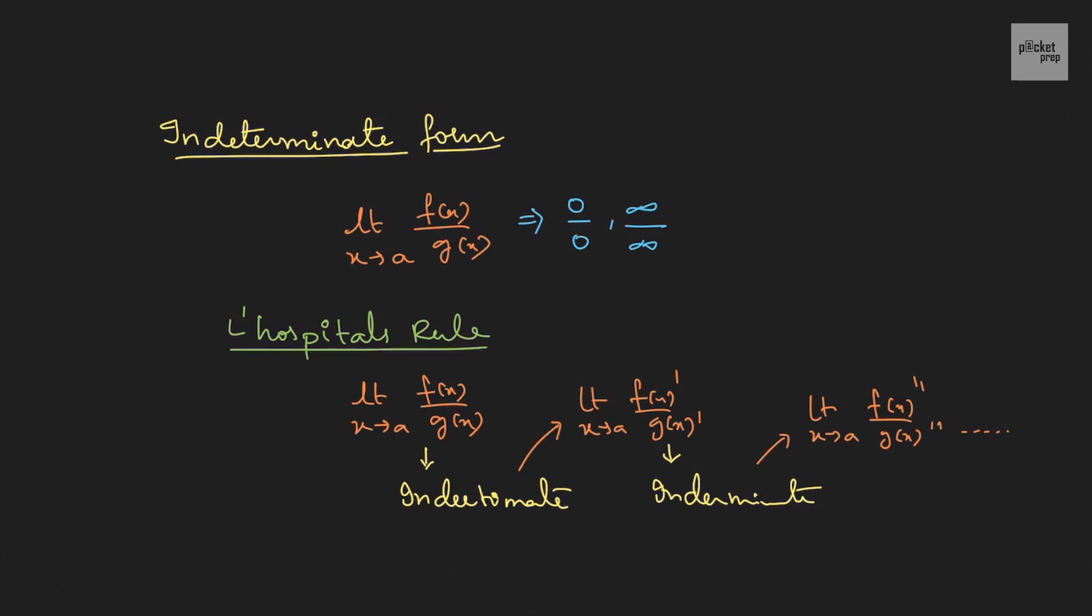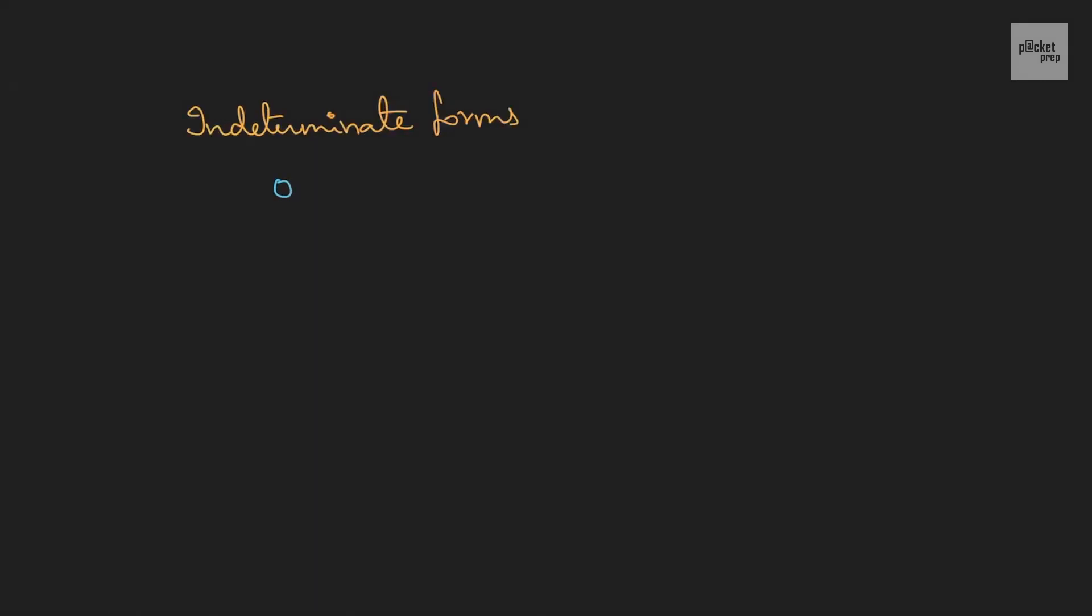Now let us understand what are the different indeterminate forms. In this, we have 0 by 0, then infinite by infinite, then 0 into infinite, then infinite minus infinite, then 1 power infinity, 0 power 0, and infinity power 0. So total there are 7 indeterminate forms.